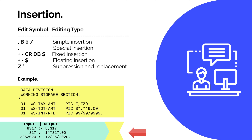COBOL insertion is where you include an additional character or symbol into an existing value. It is divided into four categories: simple insertion, special insertion, fixed insertion, and floating insertion. Looking at the examples — variable WS-TEXT-AMOUNT, WS-TOTAL-AMOUNT, and WS-INT-RT are used to reformat data. When 8317 is passed, it displays as 8,317. When a check amount of 317 is passed, it displays as $317.00. A date passed as 12252020 is formatted as 12/25/2020.